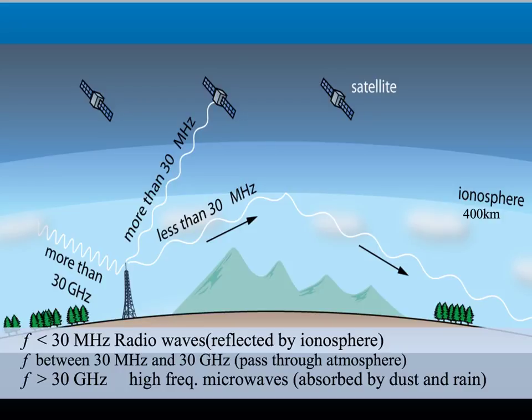The problems caused by the ionosphere and the dust, rain and other particles in the atmosphere limit the radio waves and microwaves that can pass all the way through it. Waves between 30 megahertz and 30 gigahertz are able to pass through all parts of the atmosphere, making them very valuable for communication.